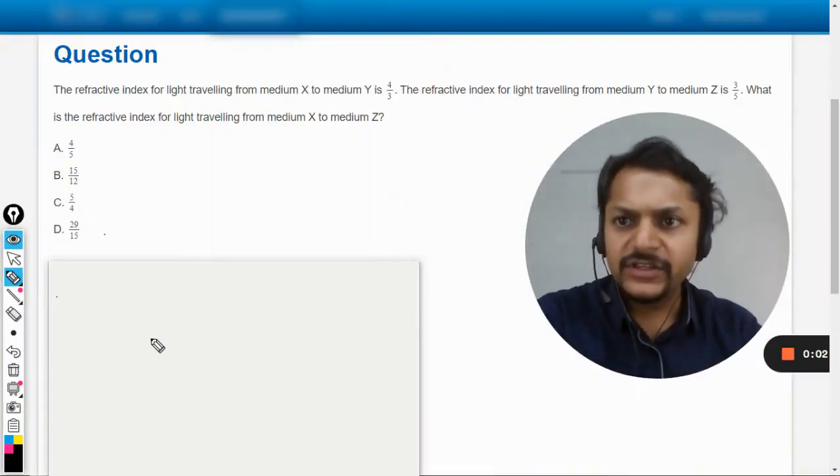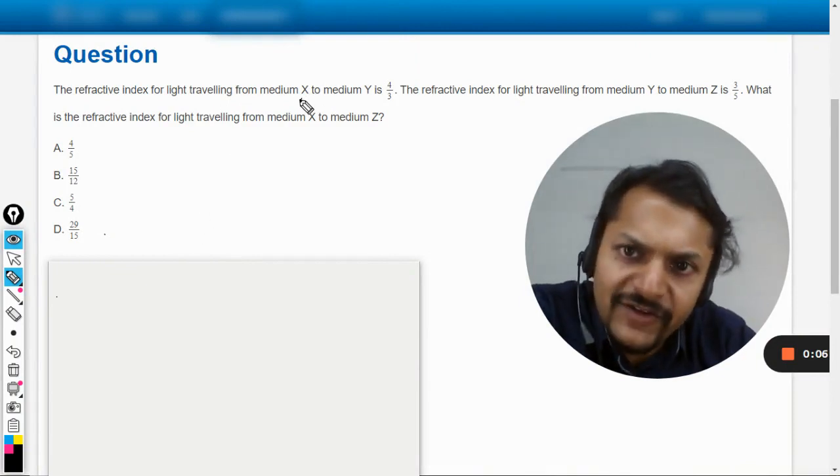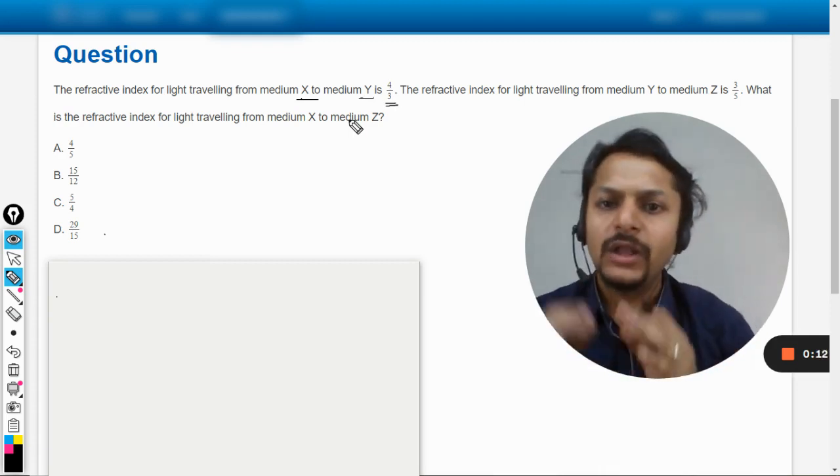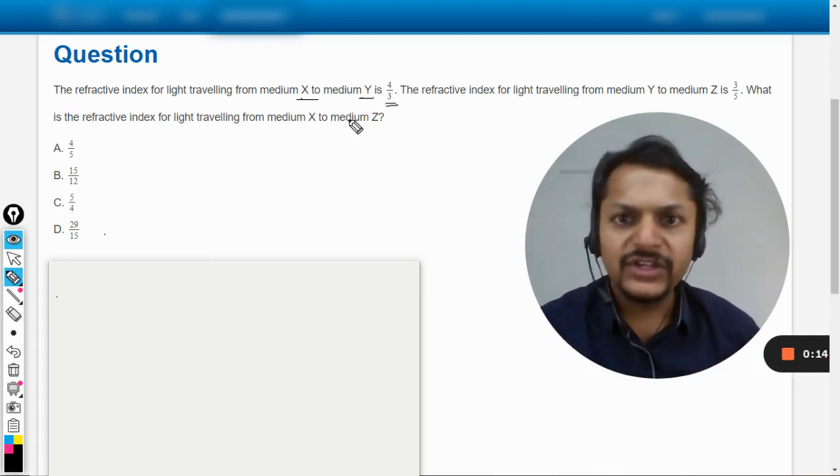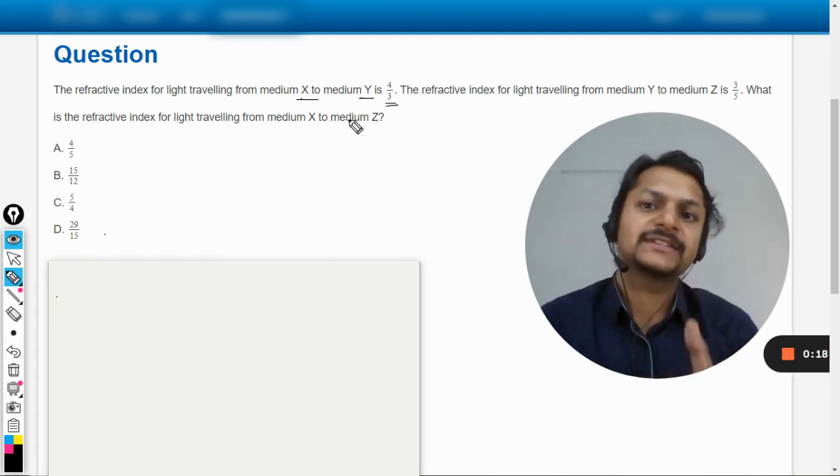Okay, dear students, let us see what is there in this question. The refractive index for light traveling from medium X to medium Y is 4 by 3. So the light is traveling from one medium to another. 4 by 3 is basically water, so medium Y can be treated as water and medium X can be taken as air.